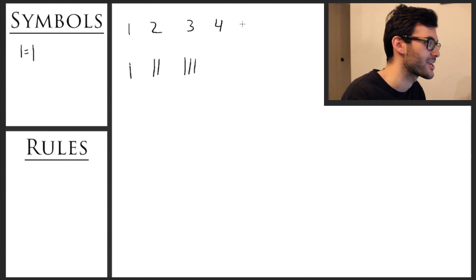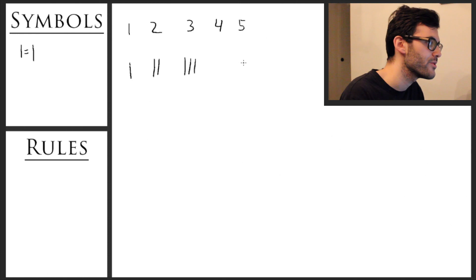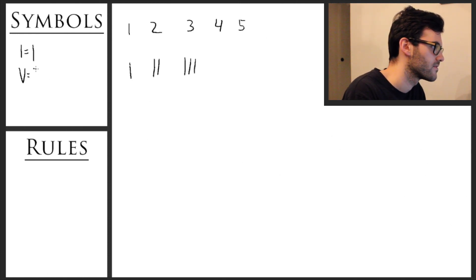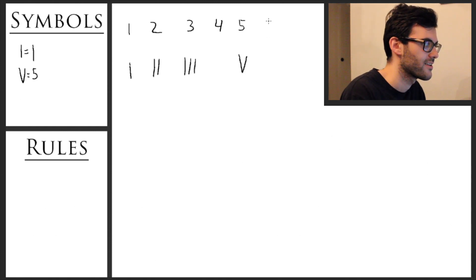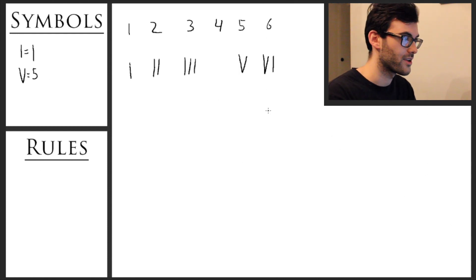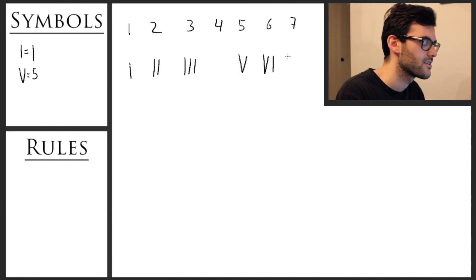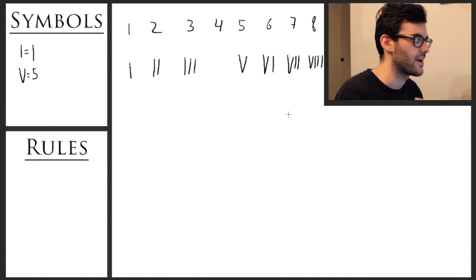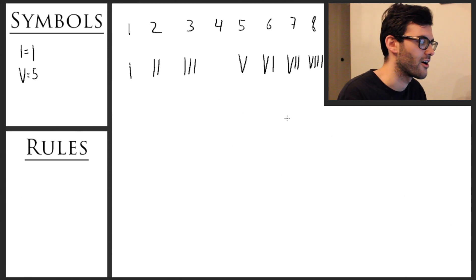Four, we're actually going to skip over that and come back to it in a second. Five uses a new symbol — the symbol for five is V. So five is V, six is VI (five and then one), seven is VII, eight is VIII. So all that is making a lot of sense so far, but why did I skip four?